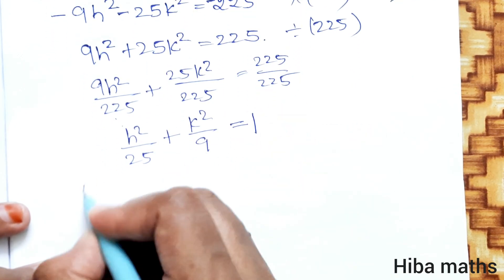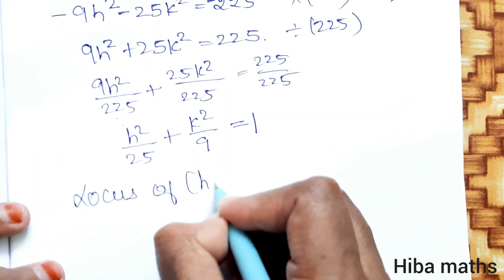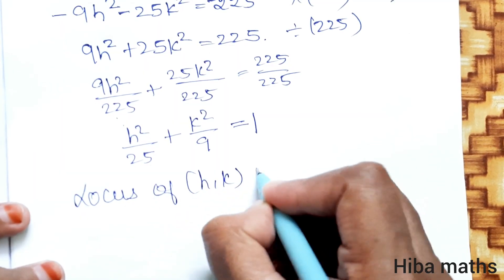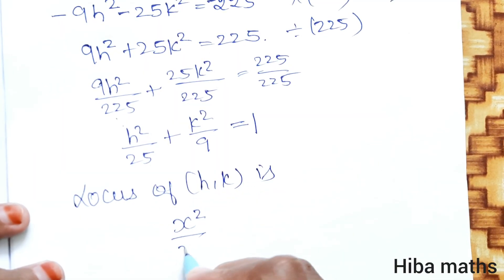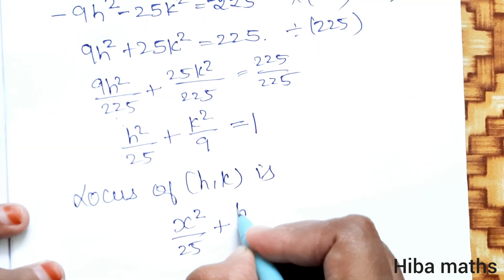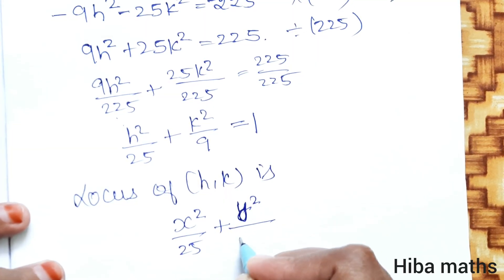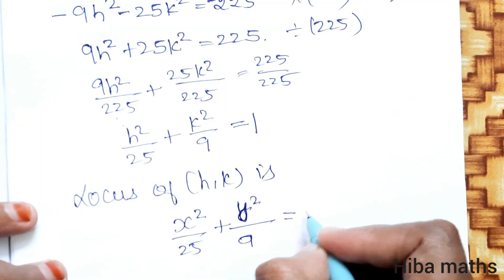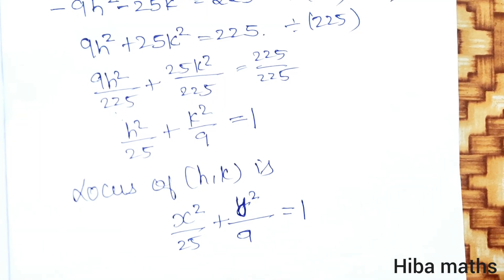Therefore, the locus of P(h,k) is obtained by replacing h with x and k with y. The final equation of the locus is x square by 25 plus y square by 9 equals 1. Thank you so much for watching.